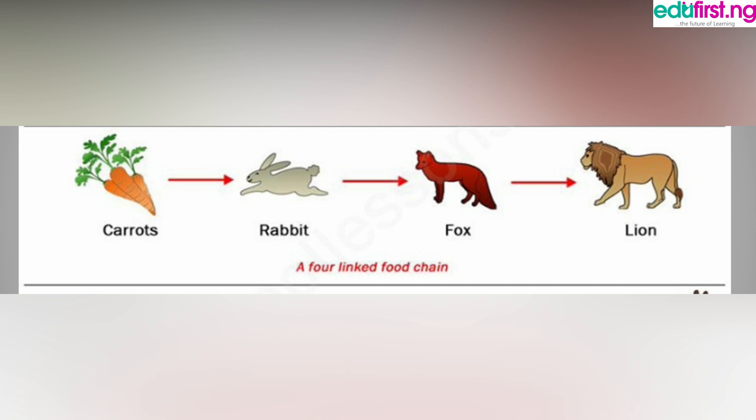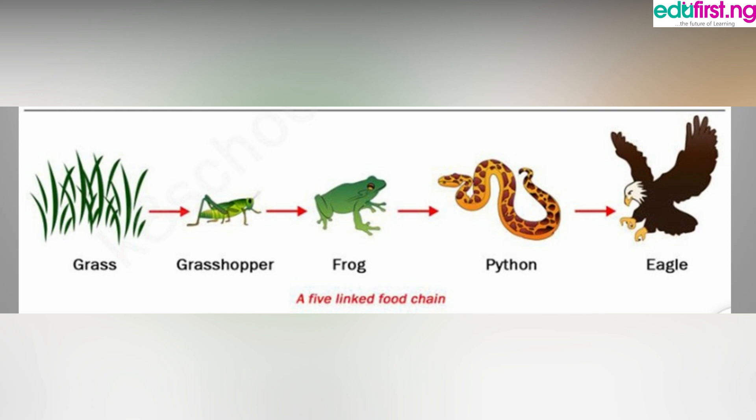In the last food chain, grass — a plant — is the primary producer. The grasshopper feeds on the grass, the frog feeds on the grasshopper, the python feeds on the frog, then the eagle feeds on the python. That's a summary of how energy is transformed or transferred in the ecosystem. Another medium of energy transformation is the food web.